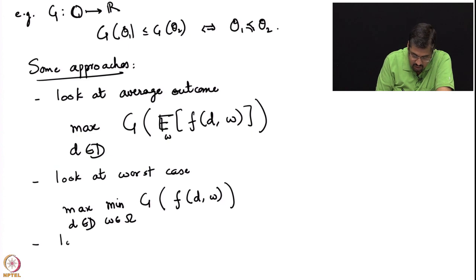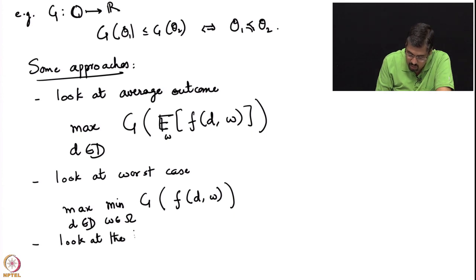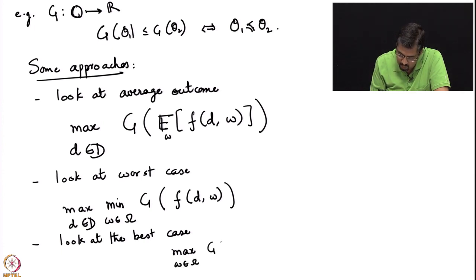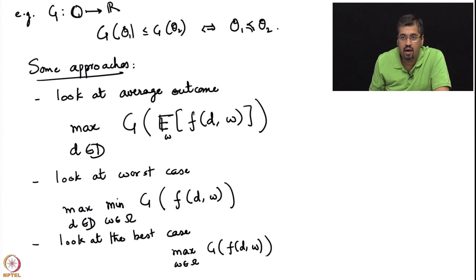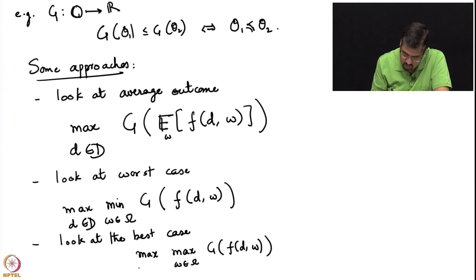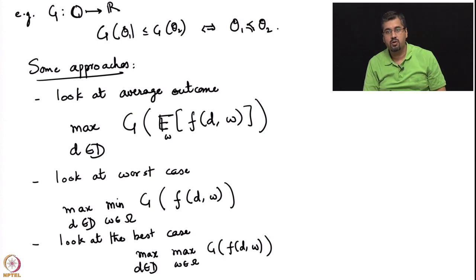The other extreme is to look at the best case — to be permanently optimistic about what will play out in the uncertainty. You think of the best possible thing that could happen when you take a decision D and nature chooses an omega, and based on this you choose the decision D that gives the best possible thing in the best possible case — maximizing the maximum over omega of G(f(D, ω)). These are some possible approaches one can adopt towards decision making under uncertainty.